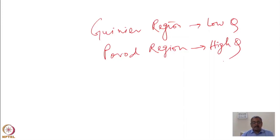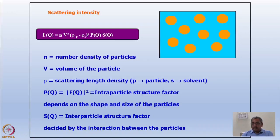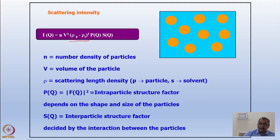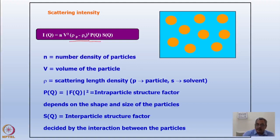With this, let me move on to something called the contrast factor. As I told you earlier, my intensity has several parts: N times V² (volume of particle, number of them), a contrast factor — the square of the difference between the scattering length densities of the solvent and the particle — then the form factor for the particle, and then something called a structure factor.